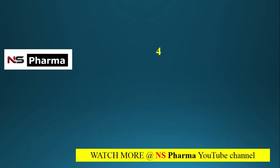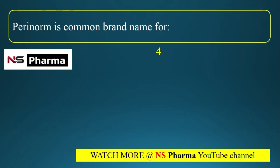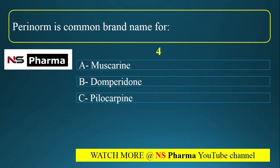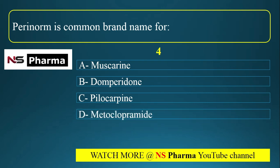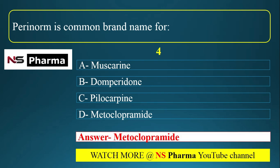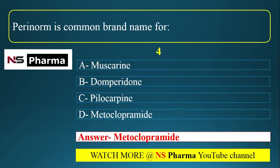Question number four: Perinorm is a common brand name for. Options are: option A, muscarine; option B, domperidone; option C, pilocarpine; option D, metoclopramide. The correct answer is option D, that is metoclopramide. Metoclopramide's brand name is Perinorm. Domperidone's brand name is Motilium.